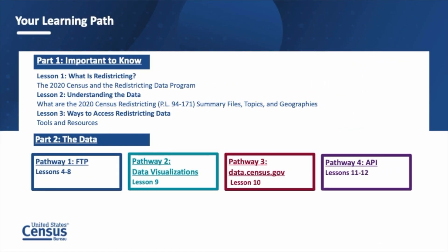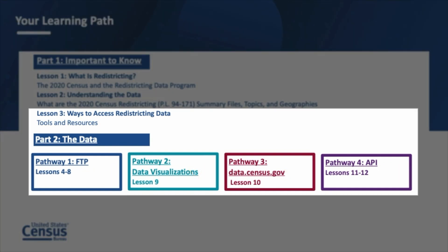Here is a visual of the learning paths. Lessons 1 through 3 are universal and support your learning for all of the learning paths in part 2. Of course, you can select more than one method to access redistricting data, so pick as many learning paths as you like. In lesson 3, you will learn more about the four paths in part 2 in order to determine which paths meet your data needs and skill level.